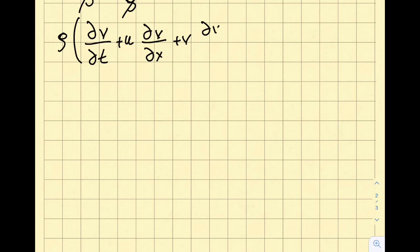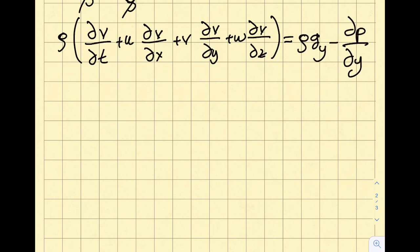So I will get rho times, del v del t plus u del v del x plus v del v del y plus w del v del z will be equal to rho g y minus del p del y. Now let's look at the left-hand side of the equation, but remember that v is equal to zero. So the whole thing, v is not a function of time, v is not a function of x, v is not a function of y, v is not a function of z.